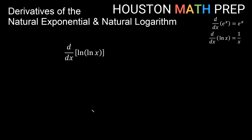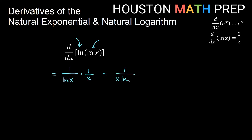Let's look at one more where we have a layered natural log — the derivative of ln of ln of x. Let's just do the outside ln first, leaving the inside alone. The derivative of ln of something is 1 over that something, so we get 1 over ln x. The chain rule says times the derivative of what's inside — the derivative of ln x is 1 over x. So here we have 1 over ln x times 1 over x, which gives us 1 over x times ln x for that one.